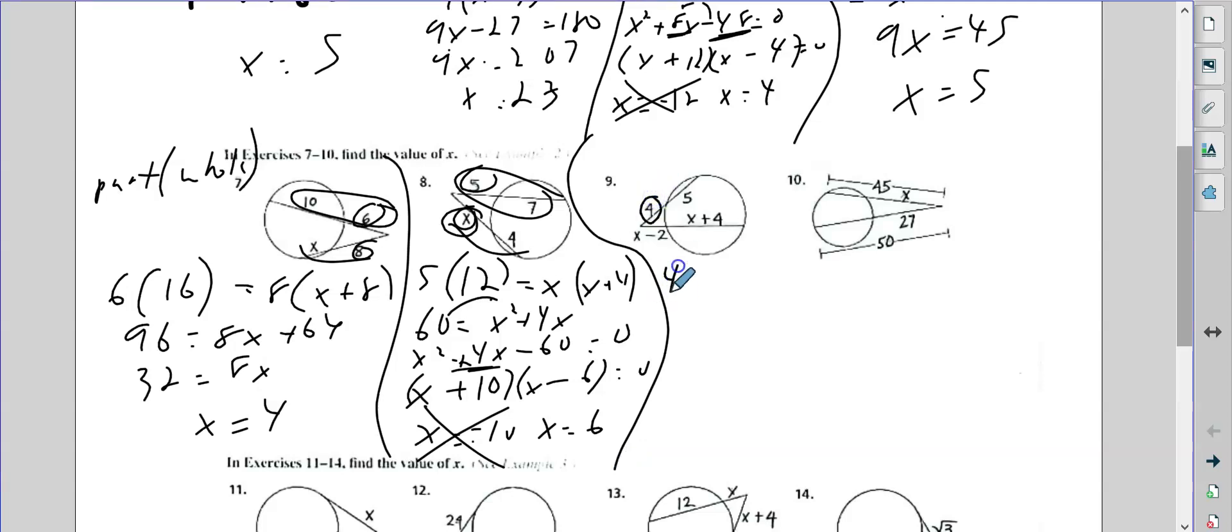All right. So again, the part 4 times the whole, 9. 4 plus 5 is 9, equals (x minus 2) times these two added together. So I'm just going to do that right here. x plus x is 2x. 4 plus negative 2 is 2.